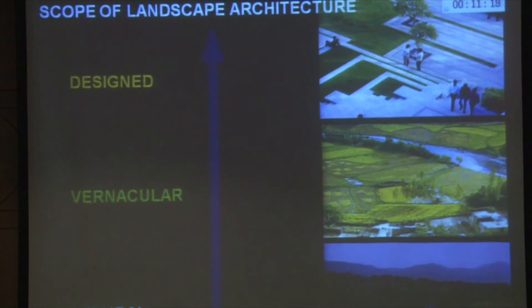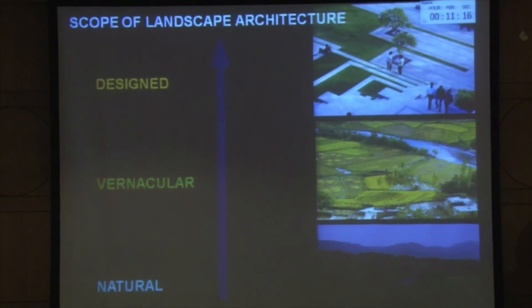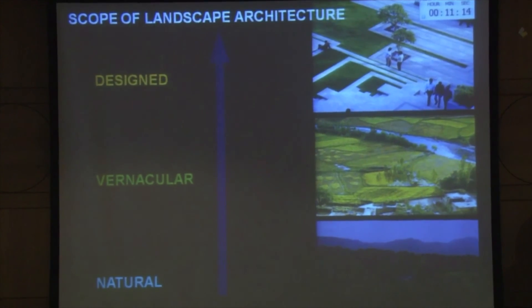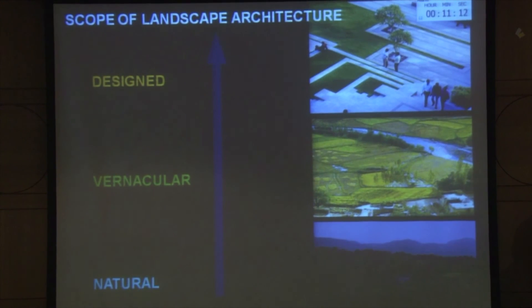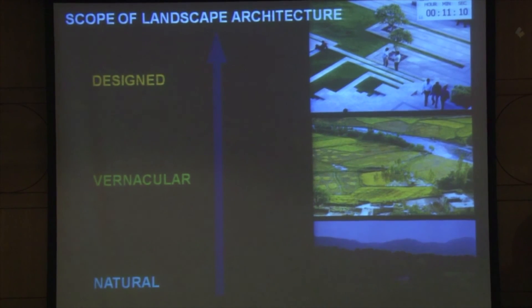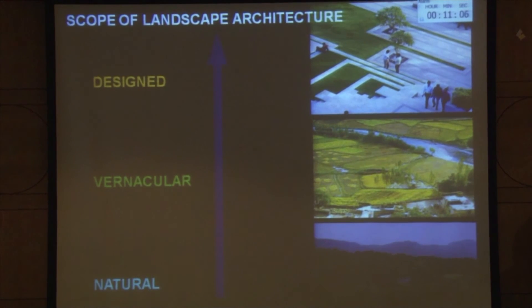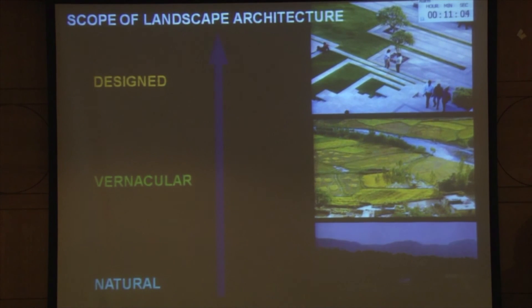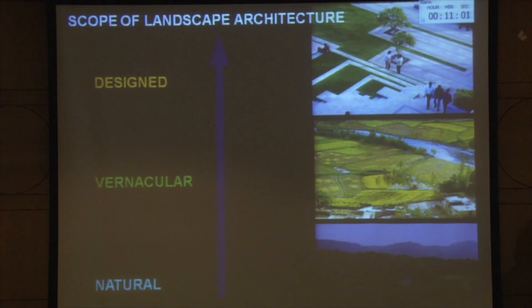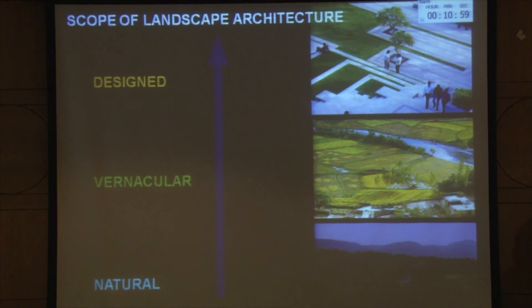The scope ranges from natural landscapes to designed landscapes, from micro level to macro level — from a courtyard landscape design to a city or sub-city level open space structure. We deal with various typologies: residential landscapes, commercial landscapes, ecological restoration projects, and so on. The palette is very vast, and the projects that come to us are more urban in nature.